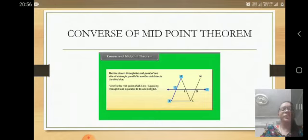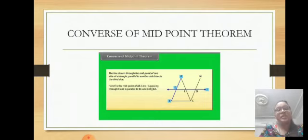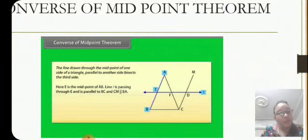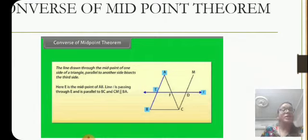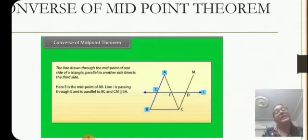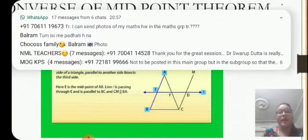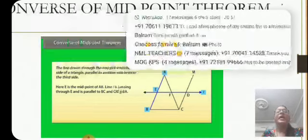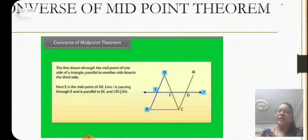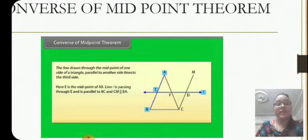The converse of the midpoint theorem: if E is the midpoint of any side of the triangle, and EF is parallel to the third side, then EF will bisect the third side also. Here, two things are given: E is the midpoint of AB, and EF is parallel to BC. We have to prove that F is the midpoint of AC. These two theorems will help us in proving the sums related to exercise 8.2.